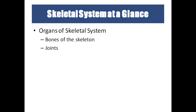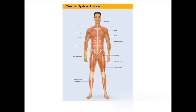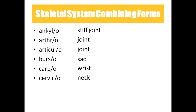The organs of the skeletal system include bones as well as joints. Joints are called the meeting place of the bones. Coming to combining forms: 'ankylo' means stiff joints — for example, ankylosis means abnormal stiffening of the joints.